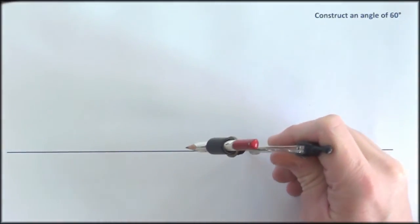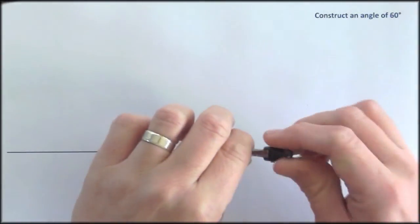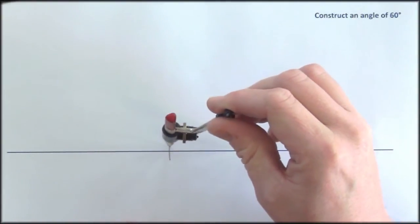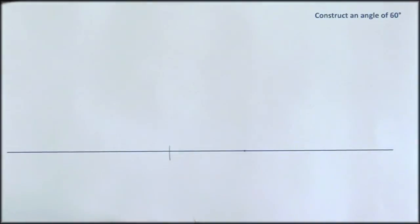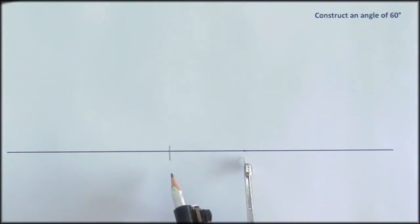I place my compass point on the given point and draw an arc that intersects the baseline there. Now those are going to be two of the vertices of the equilateral triangle.